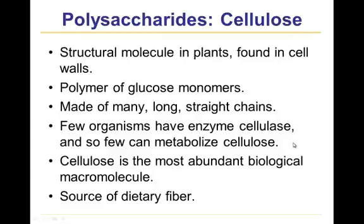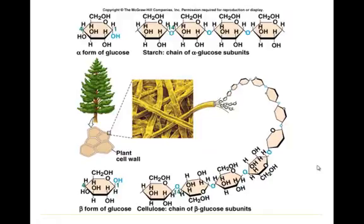Very few organisms can metabolize cellulose. Because plants are so widespread and cellulose is such a common molecule in plants, cellulose turns out to be the most abundant biological macromolecule. Human beings don't have the ability to break down cellulose, but cellulose is still an important part of our diet — it is a source of dietary fiber — and fiber can be critically important.